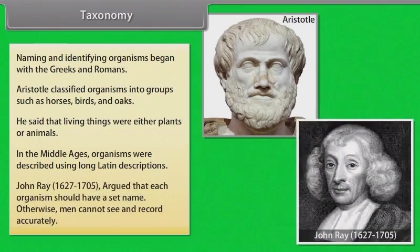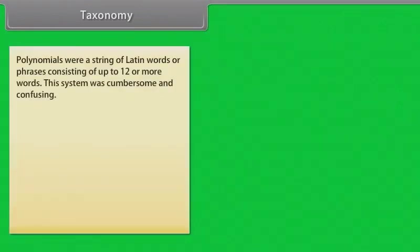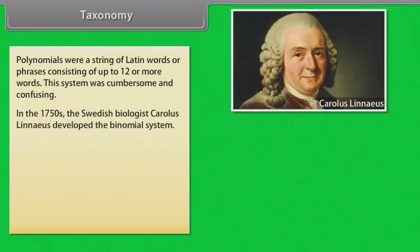John Ray (1627–1705) argued that each organism should have a set name, otherwise men cannot see and record accurately. Polynomials were a string of Latin words and phrases consisting of up to 12 or more words. This system was cumbersome and confusing.